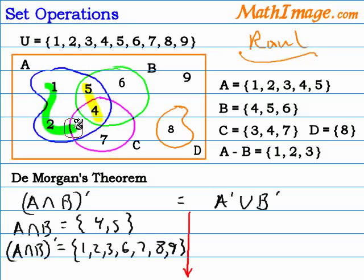And we show these numbers basically as being outside of that intersection. Basically, all the numbers that are not 4 and 5, or the elements that are not 4 and 5.